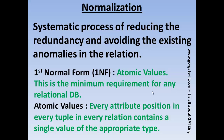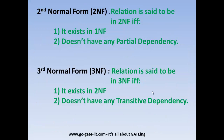Moving on to further forms, we have second and third normal form. A relation is said to be in 2NF or second normal form if and only if it exists in 1NF and it does not have any partial dependency. We have discussed all these terminologies — partial dependency, transitive dependency, and full dependency — in our previous videos. So second normal form says it should exist in 1NF and does not have any partial dependency; if it contains a partial dependency, it cannot be in second normal form.